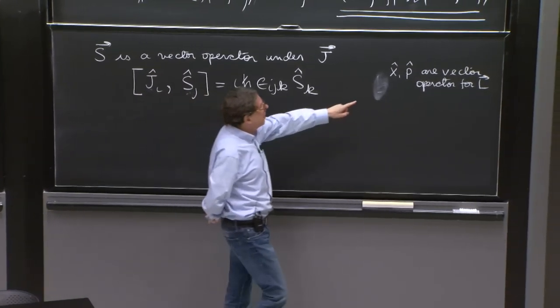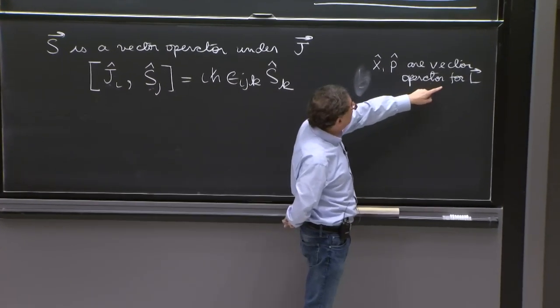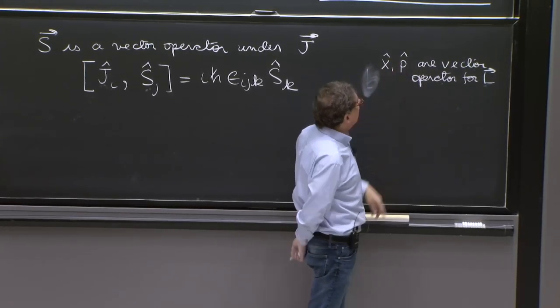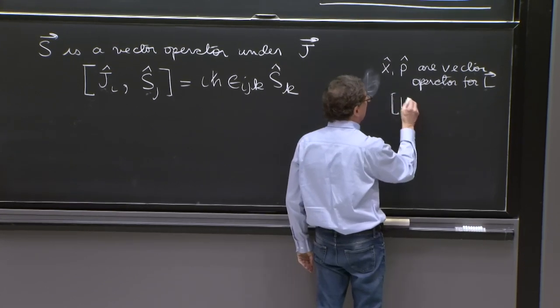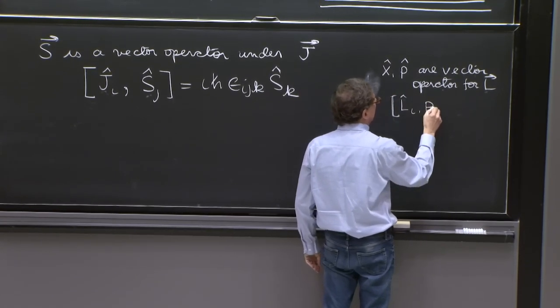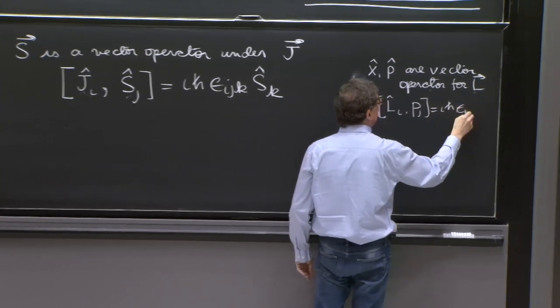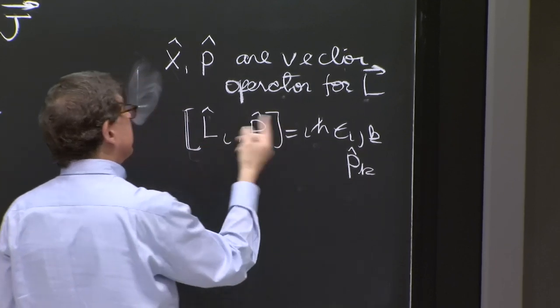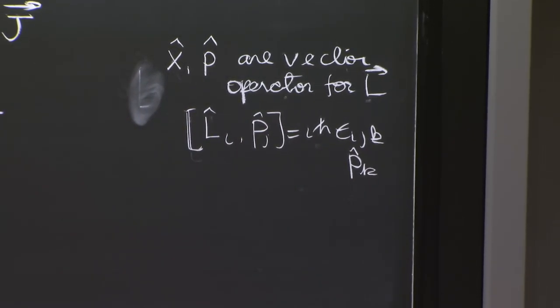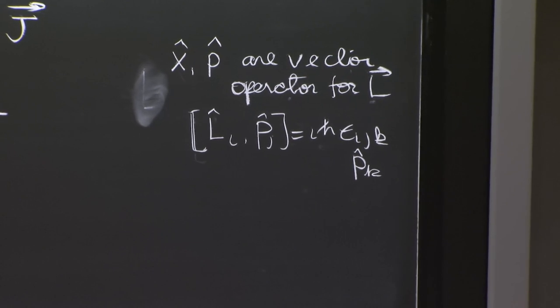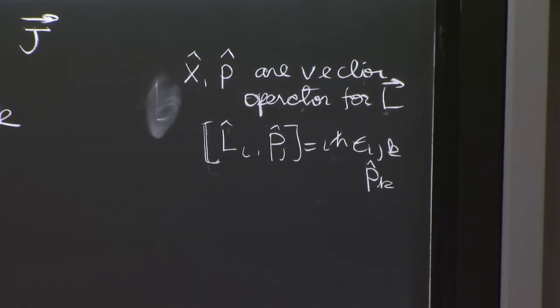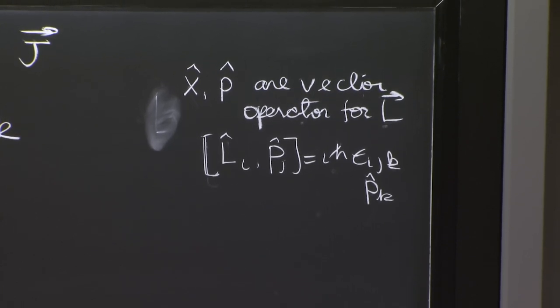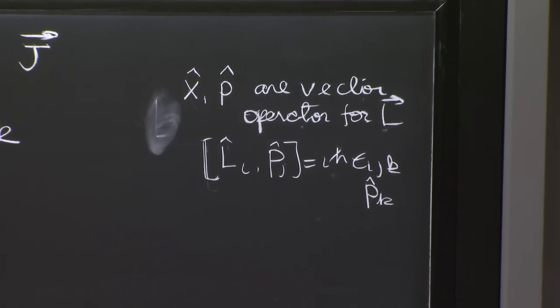You will check, remind yourself, that if you have a vector, that for L, x and p are vector operators. So for example, Li pj is i h bar epsilon ijk pk. And this you do by calculating the commutator. But after you calculate the commutator a few times, it's better to just remember it's a vector operator. That's a good way of thinking about this.